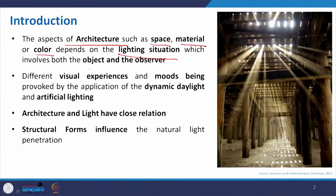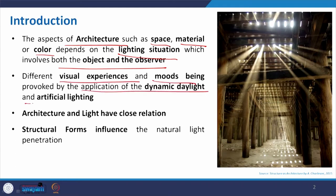The light, the object, and the observer — these three parameters will determine how we perceive one structure. Different visual experiences and moods are provoked by the application of dynamic daylight and artificial lighting. If it is too much glary, if too much light is coming on a summer day, our perception makes us feel a little bit warm, whereas a very dim light and shallow opening gives a sense of something very close and dense.